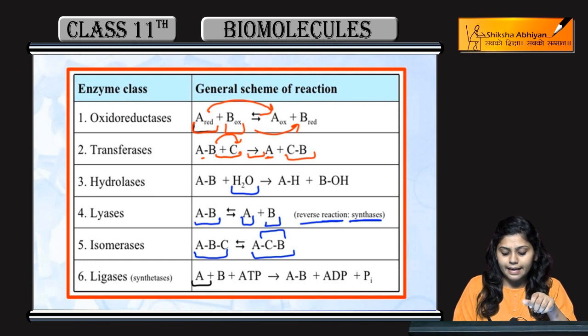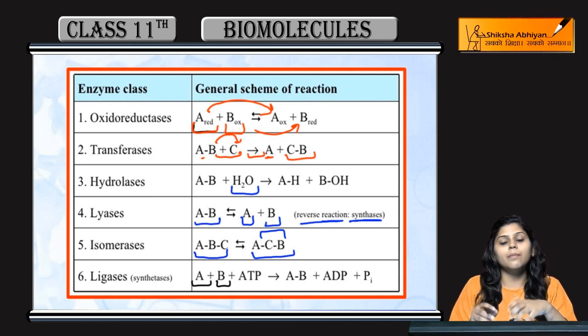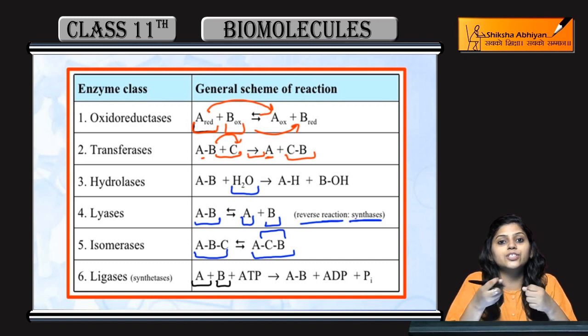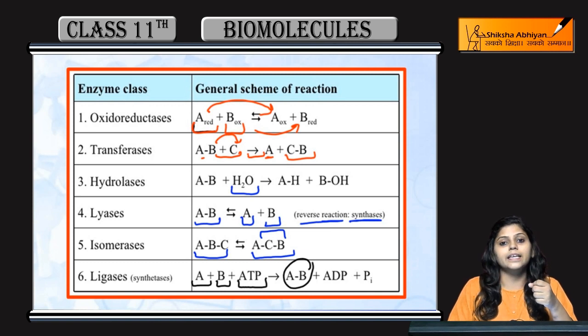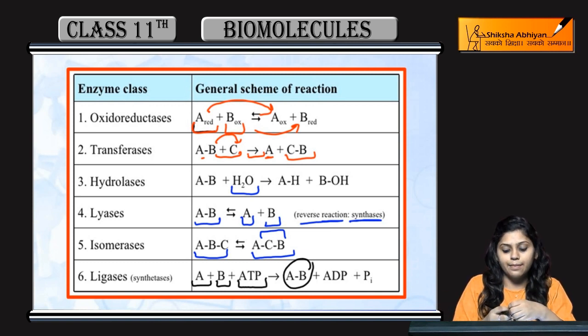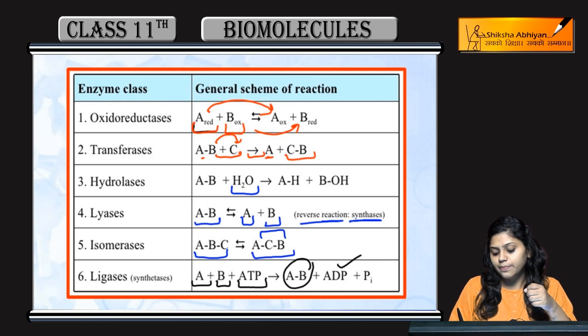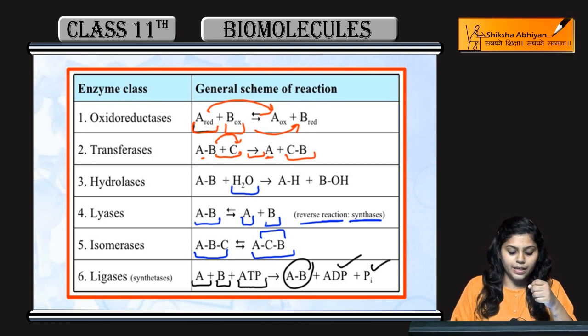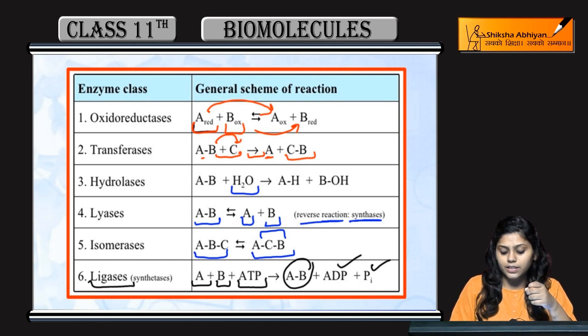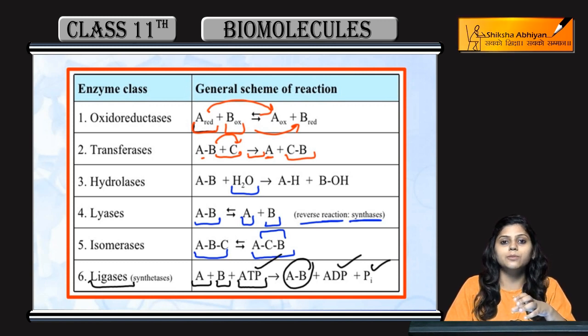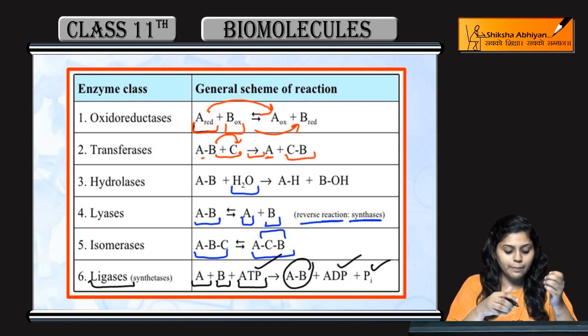Next is Ligases. There is A, there is B. Now to join two things, we discussed in the chapter that some energy is required. And what is that energy? ATP. With the help of ATP, Ligases join two compounds into AB. And release ADP and Pi. So what did Ligases do? They performed synthetase reaction. Why synthetase? Because with the help of ATP, they bonded two compounds together. They formed a bond between them.